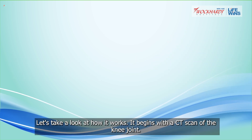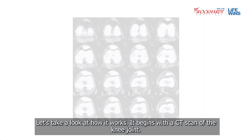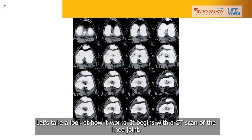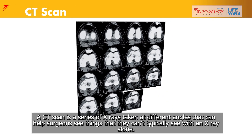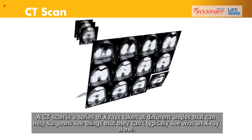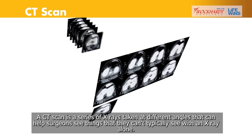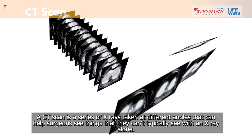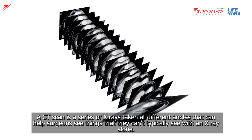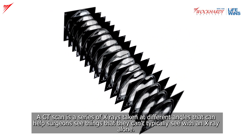Let's take a look at how it works. It begins with a CT scan of the knee joint. A CT scan is a series of X-rays taken at different angles that can help surgeons see things that they can't typically see with an X-ray alone.